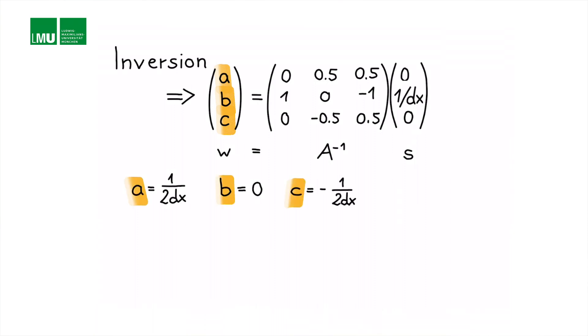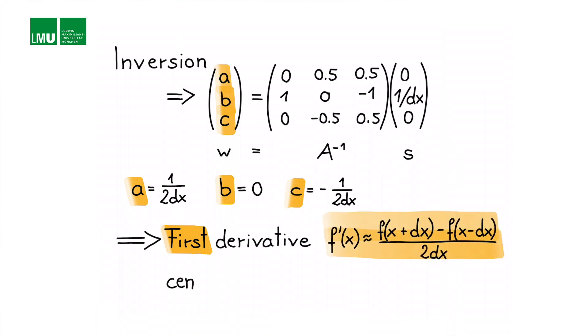If we put that back into the left hand side of our equation we can easily see that we get the definition of the first derivative f of x plus dx minus f of x minus dx divided by 2 dx and that's the classic central derivative central finite difference approximation.